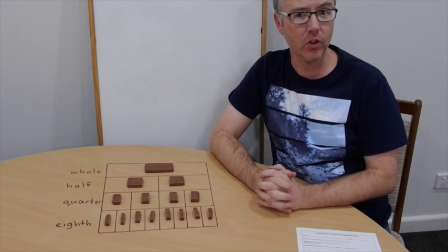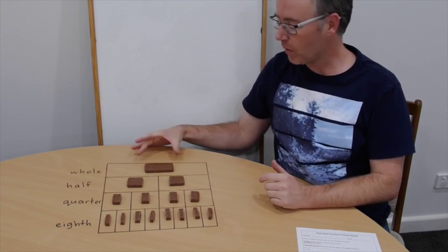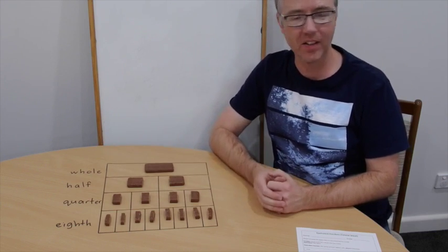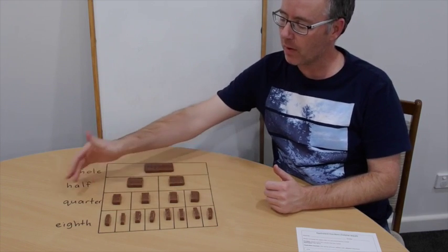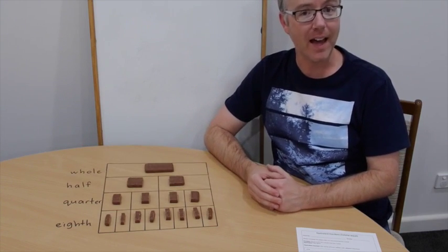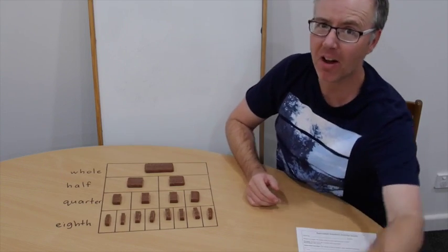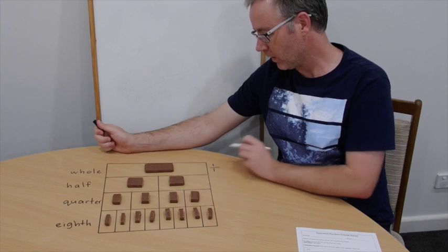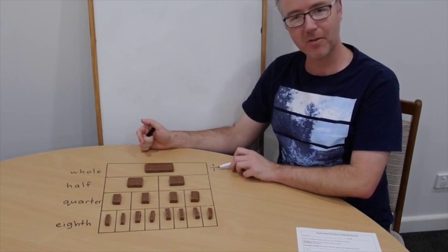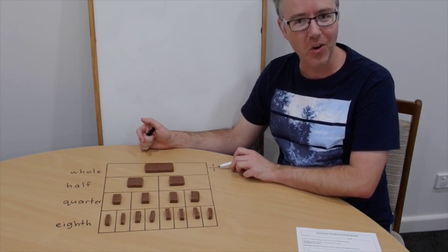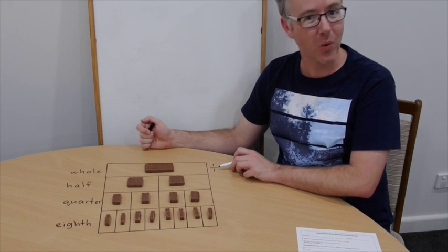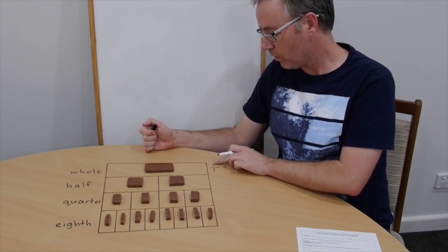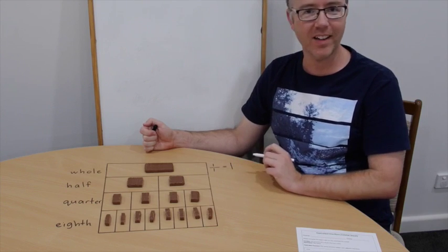Let's look at what we call these fractions. When we have a whole, it is simply whole. When it's divided into two equal parts, we call it a half. When we have four equal parts, we call it a quarter. When we have eight equal parts, we call it eighths. When we write a whole, the denominator is how many parts the whole is divided into — one equal part — and the numerator is how many I have. So numerator one, denominator one: one over one is a whole.